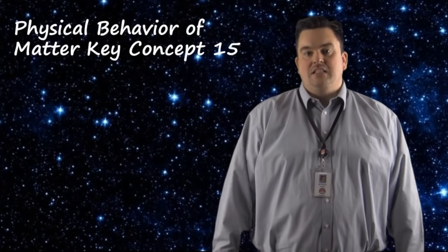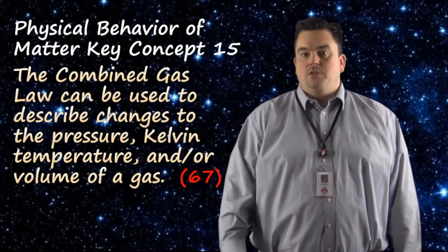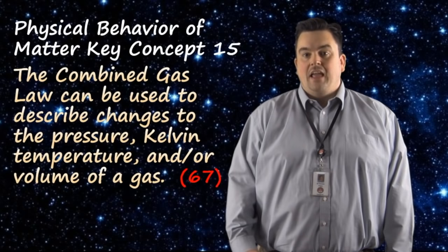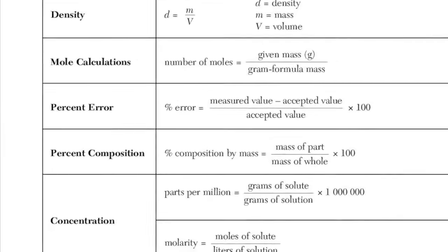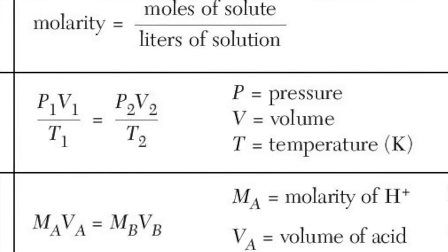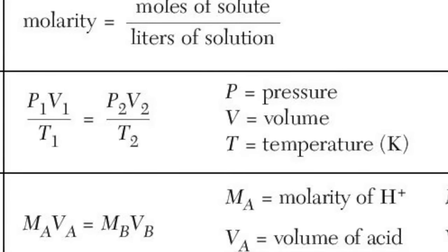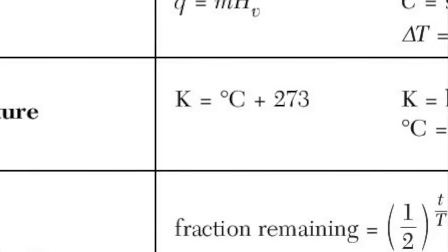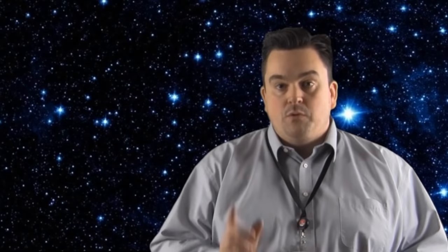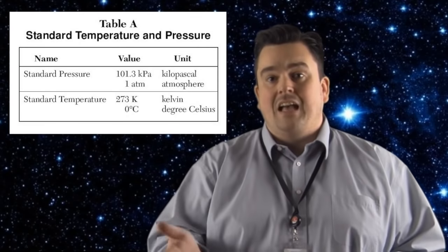Physical behavior of matter, key concept fifteen. The combined gas law can be used to describe changes to the pressure, Kelvin temperature, and or the volume of the gas. The formula for the combined gas law can be found on table T of your reference tables. Remember, this calculation is used to find the changing conditions on a gas. Pressure can be measured in any unit. Also, the volume can be measured in any unit. But it's important to remember that temperature must be in Kelvin. So use your reference tables, if you have to, to convert from Celsius to Kelvin. And one last thing. If you see STP, that stands for Standard Temperature and Pressure, which can be found on table A.